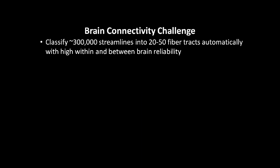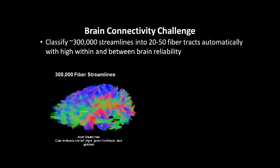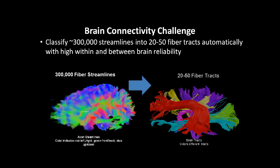The brain connectivity challenge is to classify 300,000 streamlines into 20 to 50 fiber tracks automatically with high within and between brain reliability. On the left is a graphic showing the axon streamlines with colors indicating the direction of movement. On the right is the segmentation of the same data into fiber tracks by an expert neuroanatomist.